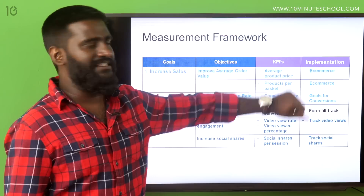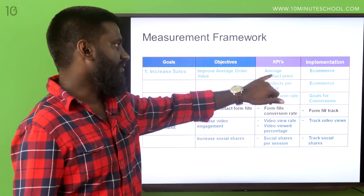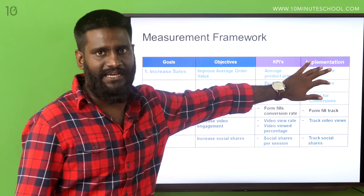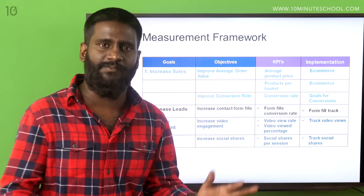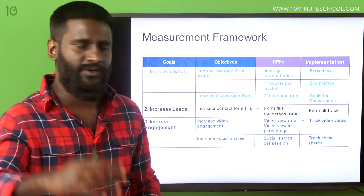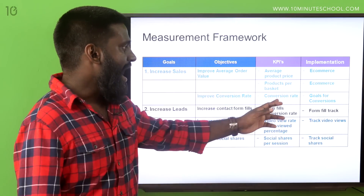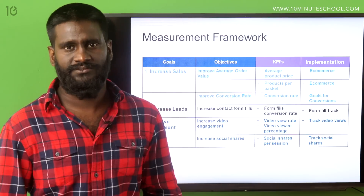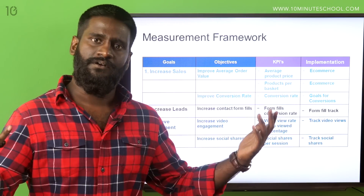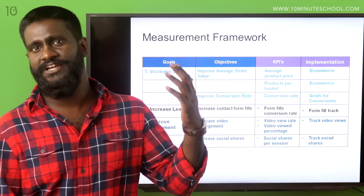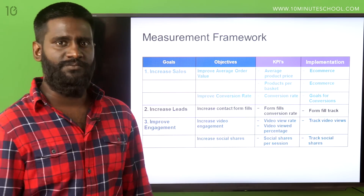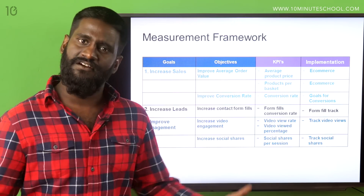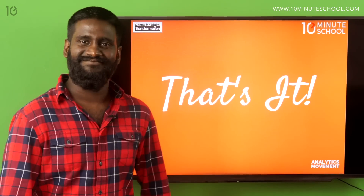What are the implementations you need to get these things done? You can implement enhanced e-commerce — just Google it, you can do it. And for conversion rate, you just have to set up your goals in Google. There are plenty of videos on YouTube, so you can easily find it.